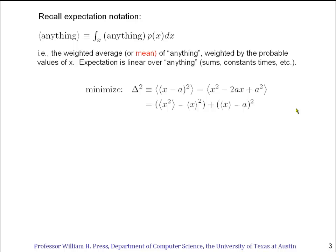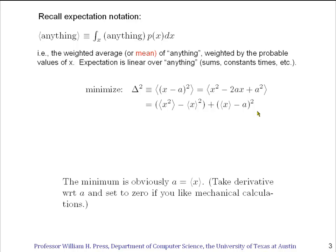Anyway, the result you can see is an expression that has a piece that doesn't depend on a at all, so that won't enter into the minimization. And then this piece, which we can trivially figure out what the minimum is. The trivial minimum of this is zero, and it achieves that only if we set a equal to the expectation of x. Well, it sounds a little circular, but actually it's not. We've actually learned something. We've learned that the expectation of x, which is also called the mean of x, has the property that it is the value that minimizes the mean square deviation of the probabilistic values of x around it.